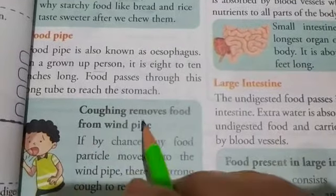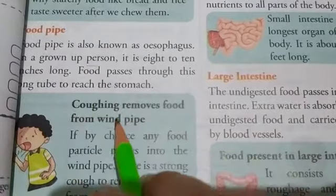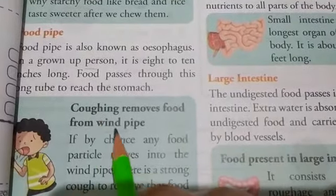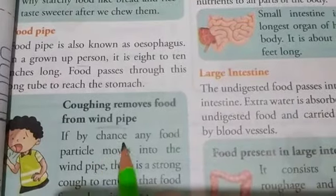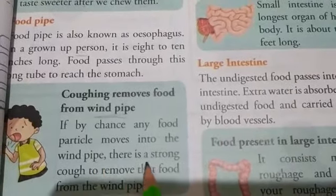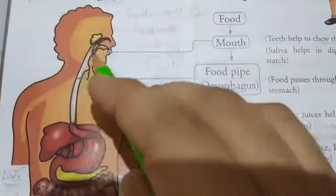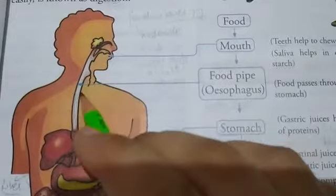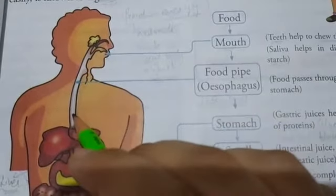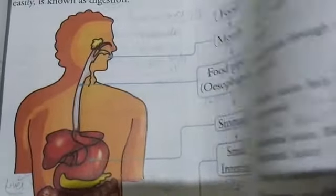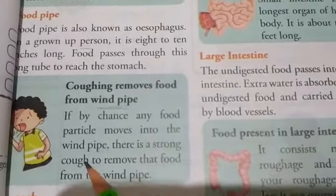Next: coughing removes food from the windpipe. There are two pipes — the food pipe and the windpipe. The windpipe and food pipe are very close to each other; the food pipe is just behind the windpipe. If by chance any food particle moves into the windpipe, there is a strong cough to remove the food from the windpipe.